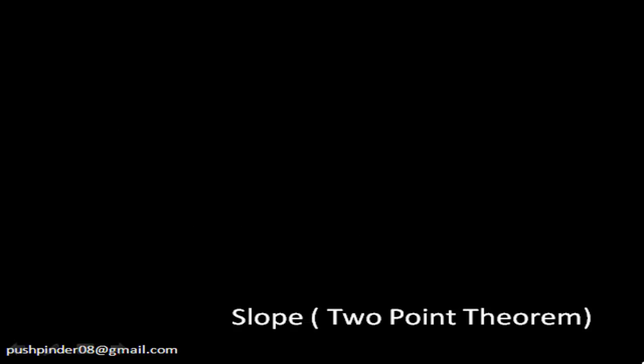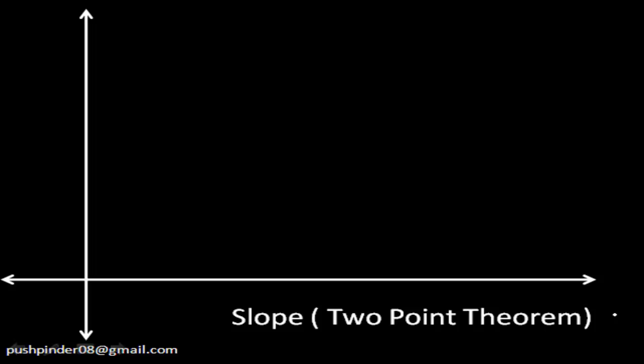You must have watched video 1 on coordinate geometry, where you learned that the slope of the line equals the tangent of the angle made by the x-axis and the line. Let me give you a brief overview. Let's suppose this is the x-axis and this is the y-axis, and this is the line containing two points. These are the endpoints of the line.